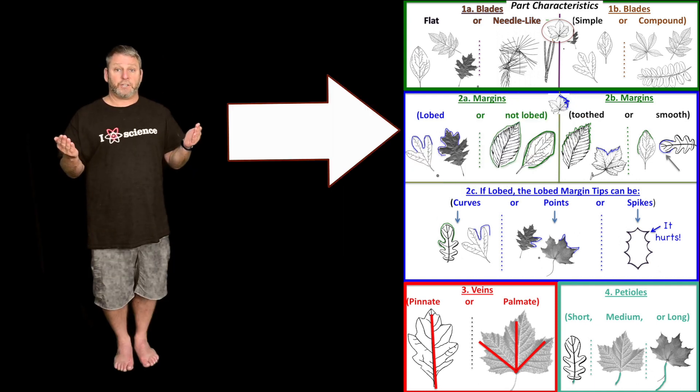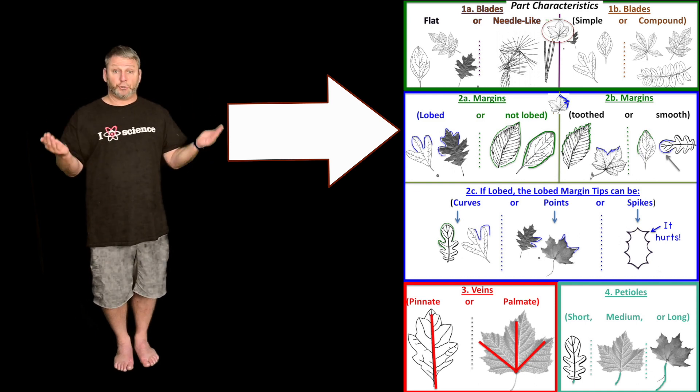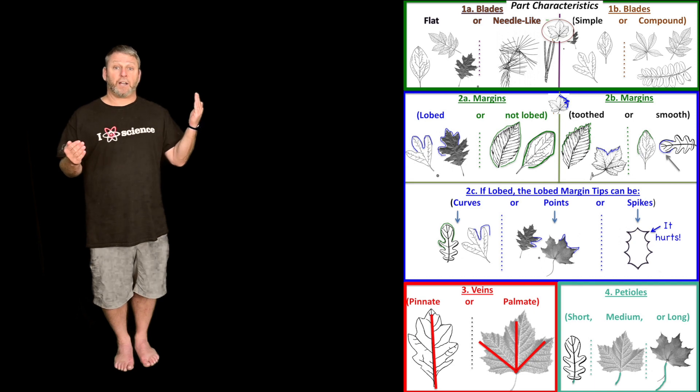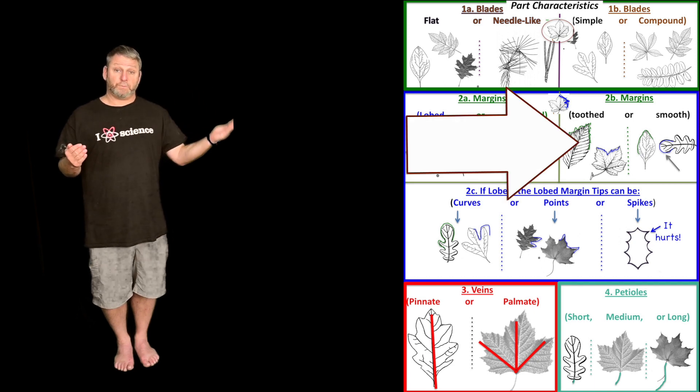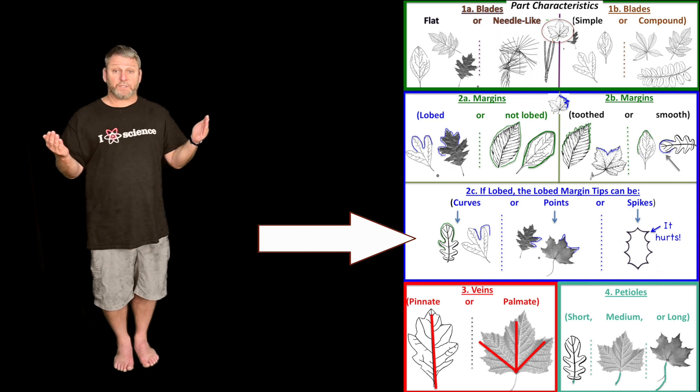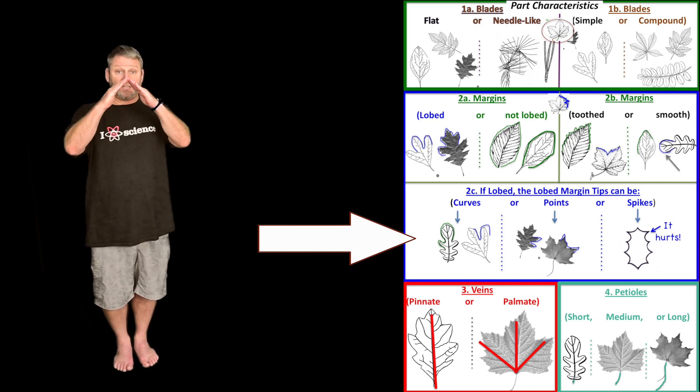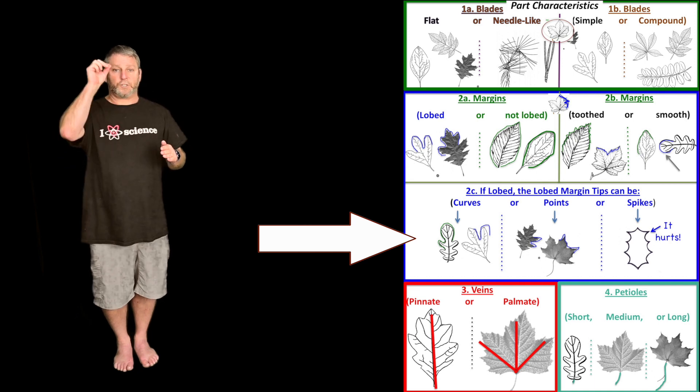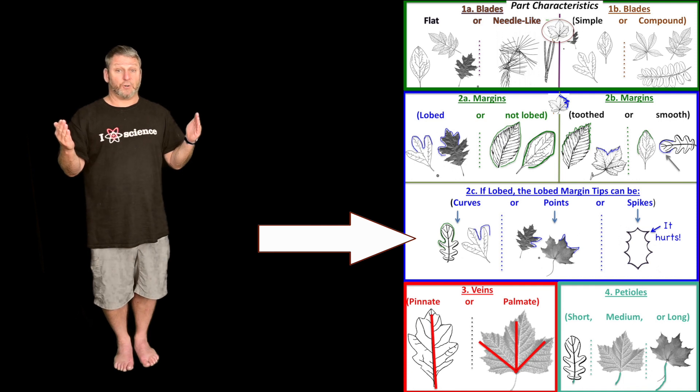Then you move to the margin. The margin can either be lobed or not lobed. Choose one of those two choices. Then move to the next box where it can either be a smooth margin or a tooth margin. Choose one of those. Then go to the box down below where you're looking at the tips of the lobes. If it has lobes, the tips will either be pointy or curved or spiky where they hurt. Choose one of those three and only make that choice if there's lobes. If there's no lobes, you can actually skip that choice.